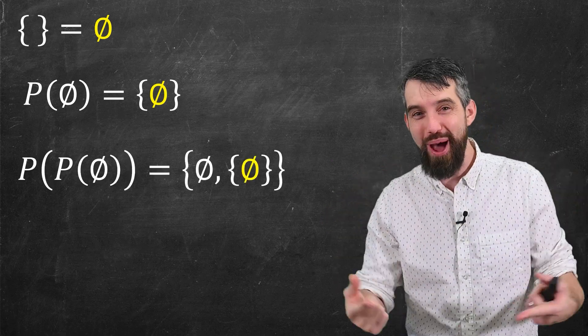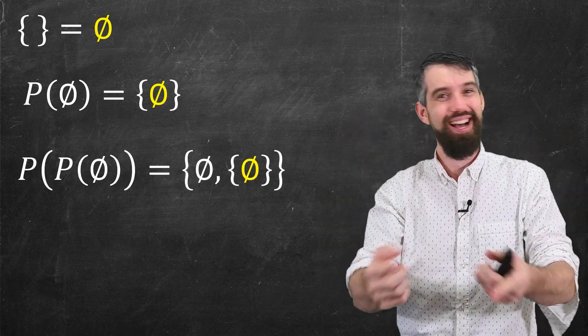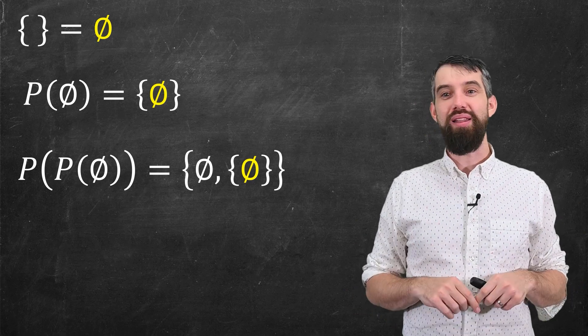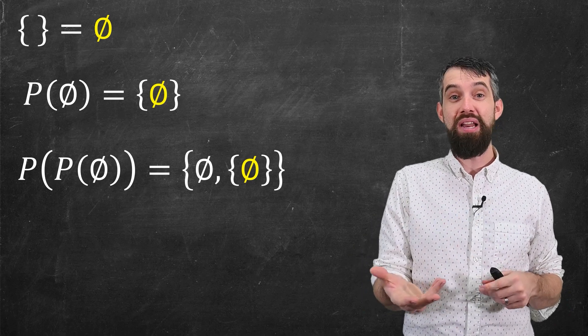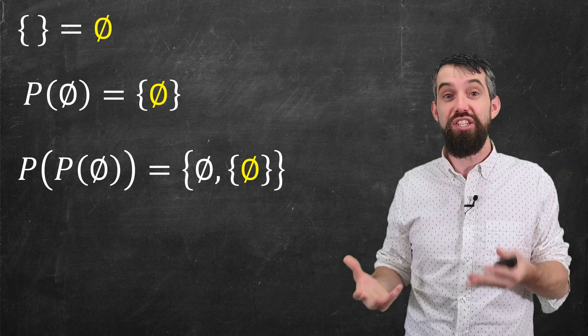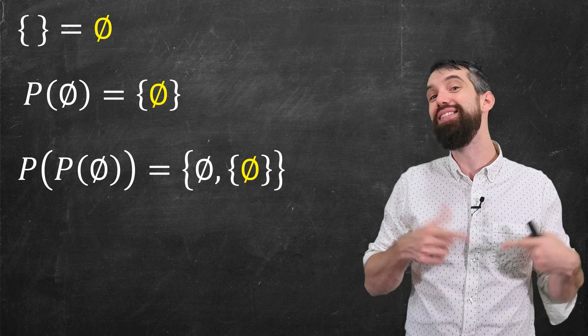Let's do the power set of the power set of the empty set. A rather silly thing to consider. Well, again, it's a set with various subsets inside of it. One of them is always going to be the empty set, and the other one's going to be the original, which was the set containing the empty set.